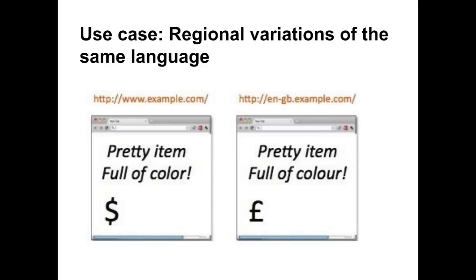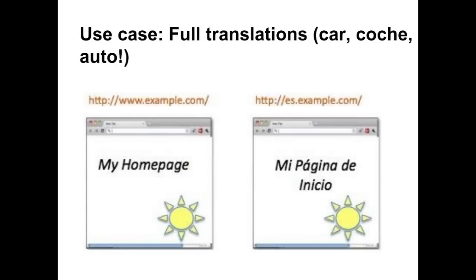Now let's cover the two main use cases for international sites. The first use case is when a site has a regional variation of a single language. On www.example.com, the page is in American English using US dollars. However, the site may have a UK version available at en-gb.example.com, using British English with currency in pounds rather than dollars. This is the use case of country-based language variations of the same language.